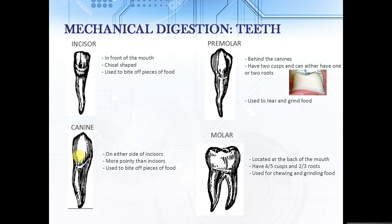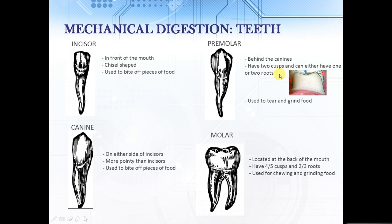We've got our canines, which look quite similar but they're a bit pointier than the incisors and they're located on either side of them. We use canines also to bite off pieces of food. We then have our premolars, which are located behind the canines and they have two cusps. Now we call the pointy parts of the teeth cusps. Premolars can either have one or two roots, and premolars are used to tear and grind food.